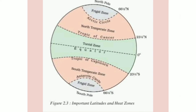अब North में आगे जाएं। Northern Hemisphere में 23 के बाद गिनते हुए जब 66 degree 30 minutes North पर जाएंगे, तो जो circle बनता है, जो Parallel of Latitude है, उसे हम Arctic Circle कहेंगे। अब Southern Hemisphere में भी इतने ही distance पर — 66 degree 30 minutes South, Equator के South में — जो Parallel of Latitude है, उसको हम Antarctic Circle कहेंगे।